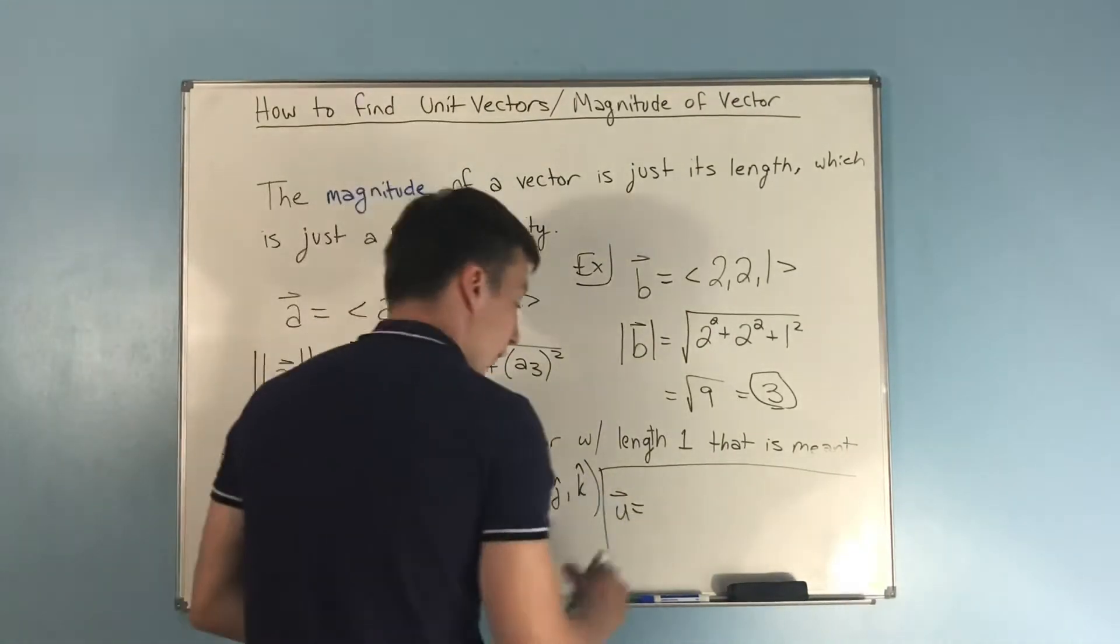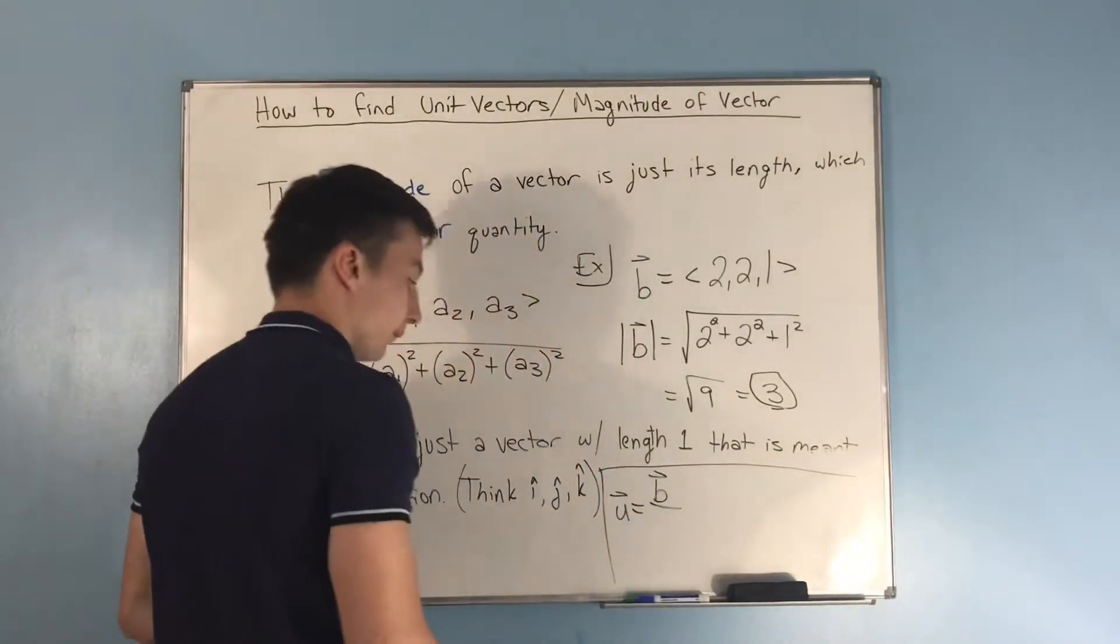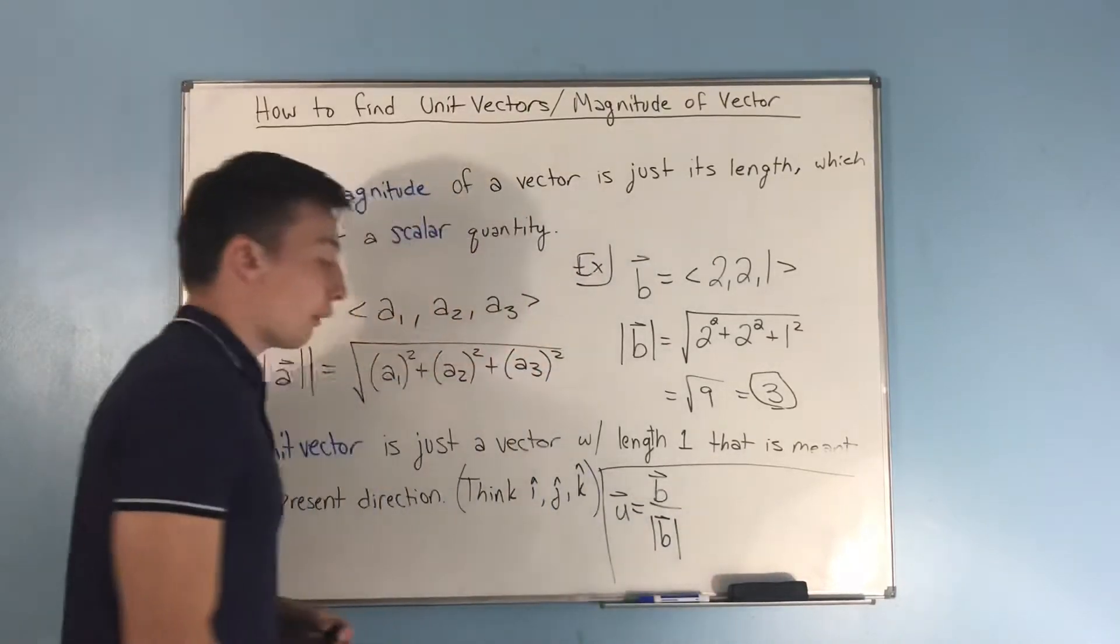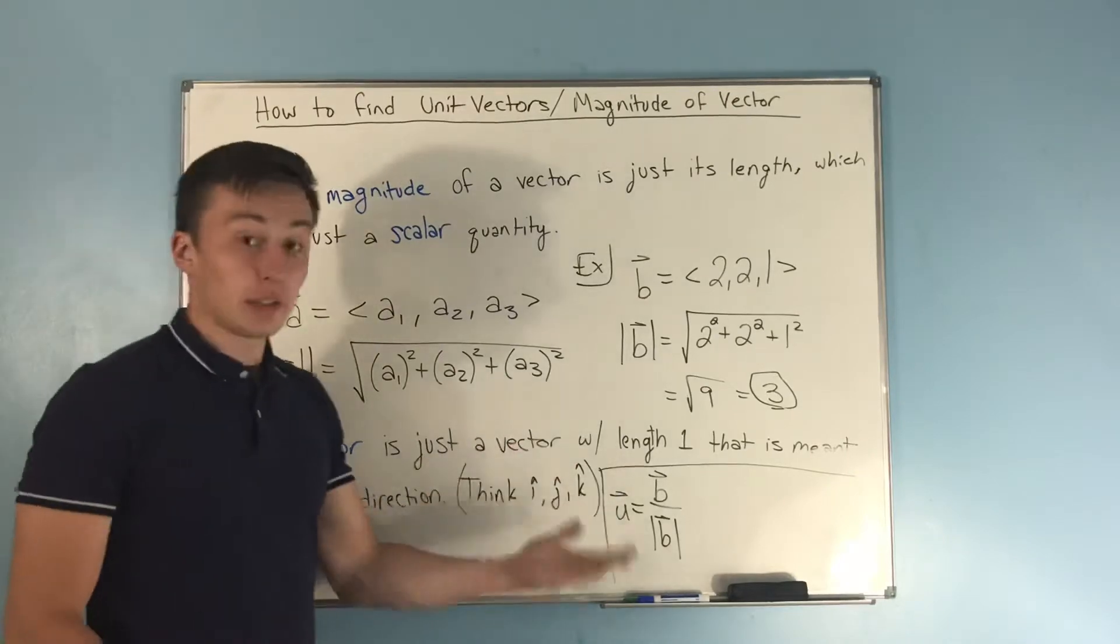So how you find the unit vector is to take the vector itself and divide it by the magnitude of the vector. In a sense, you're just making the magnitude 1.